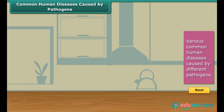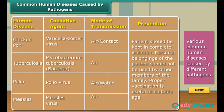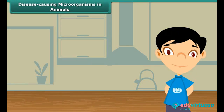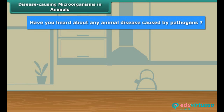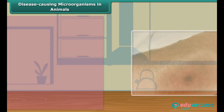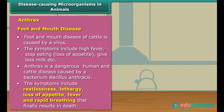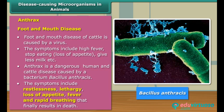Here is a list describing various common human diseases caused by different pathogens. Now let's move on to diseases in animals. Anthrax and foot-and-mouth disease are common examples of animal diseases. Anthrax is a bacterial disease caused by Bacillus anthracis, while foot-and-mouth disease in cattle is caused by a virus.